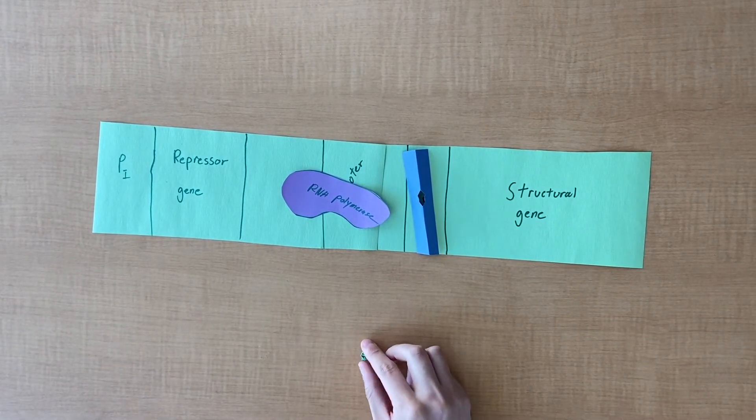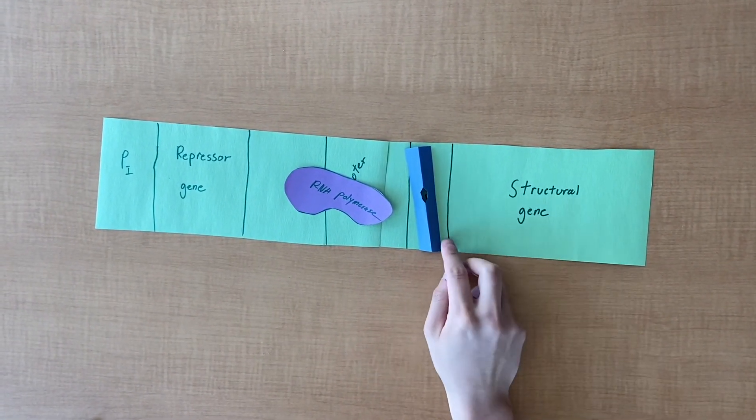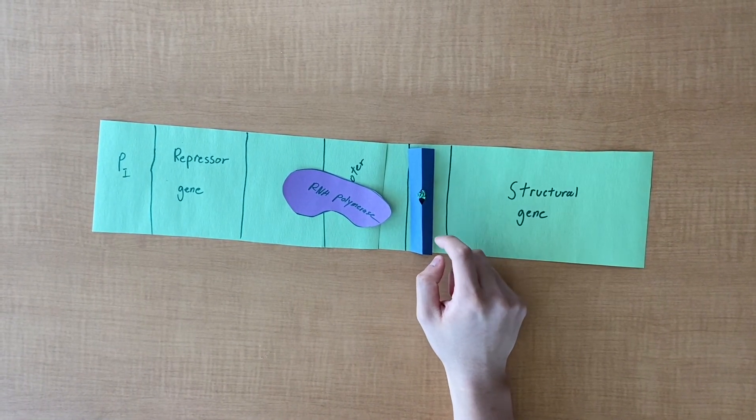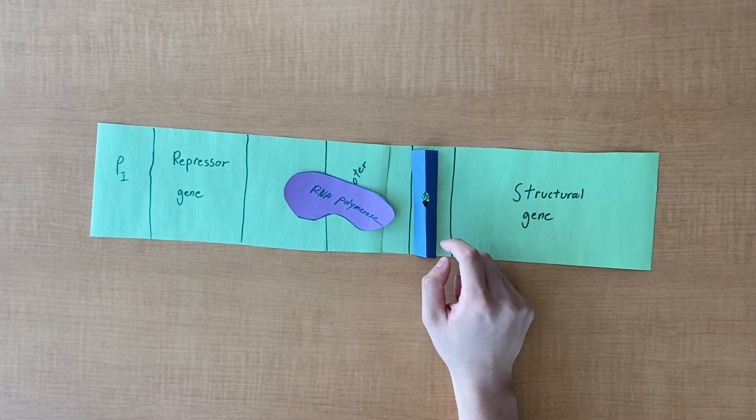Effector molecule can make an active repressor inactive by binding to it. Effector molecule binds to the allosteric site of the repressor protein to make it inactive.